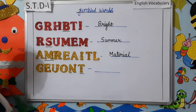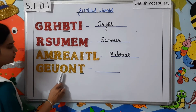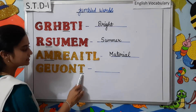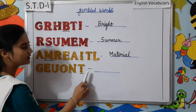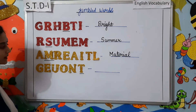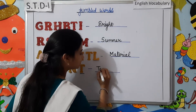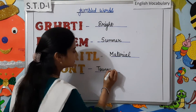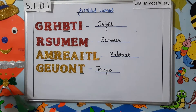Moving on to the next one. G-E-U-O-N-T. And we have underlined the letter T, that means we have to start with the letter T. So the correct spelling is T-O-U-N-G-E. Tongue. Understood children? Very good.